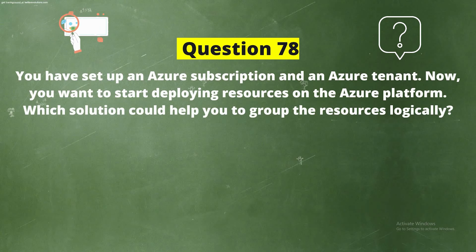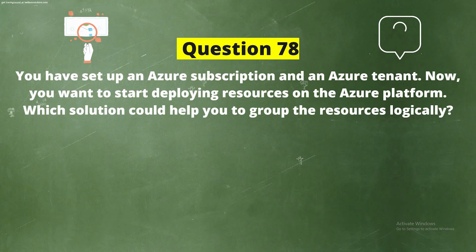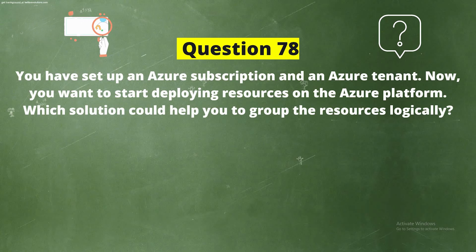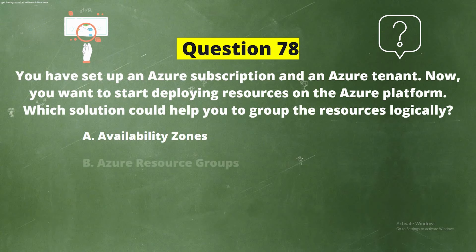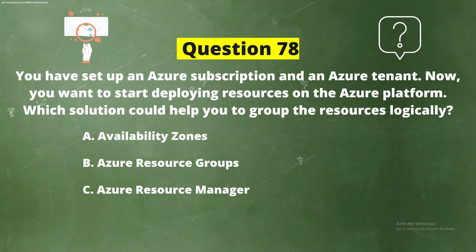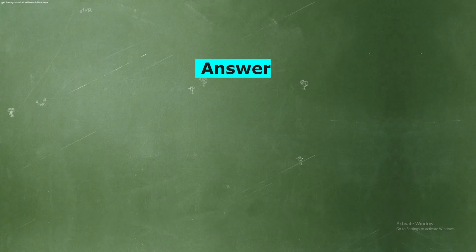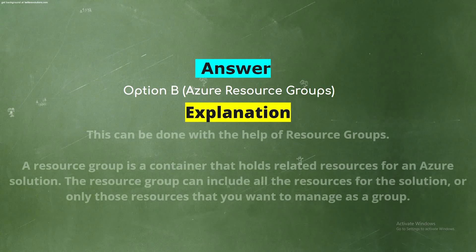Question 78: You have set up an Azure subscription and an Azure tenant. Now you want to start deploying resources on the Azure platform. Which solution could help you to group the resources logically? Options: A) Availability Zones, B) Azure Resource Groups, C) Azure Resource Manager, D) Azure Regions. The correct answer is option B, Azure Resource Groups.